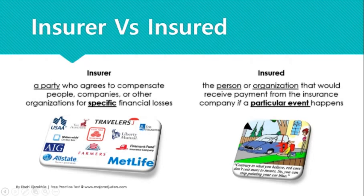The insured is the person or organization that would receive payment from the insurance company if a particular event happens. It's not going to cover every event, and it's not going to give you a payment if nothing happens. There has to be a certain defined event — usually sudden and accidental — that will cause the insurer to give payment to the insured.